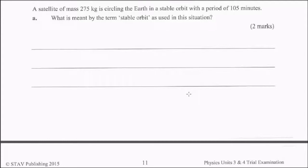Satellite at mass of 275 kilos circling the earth with a period of 105 minutes. What is meant by the term stable orbit as used in this situation? Look I think there are a few ways you could express this one. People talked about a constant radius. The other way that I think is worth thinking about here is that the centripetal force is the force of gravity on the object. That's another way of explaining that I think so either of those is fine.